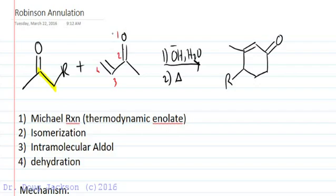We isomerize the resulting enolate and then we do an intramolecular aldol from that enolate followed by a dehydration to form a new alpha beta unsaturated ketone which we see right here.